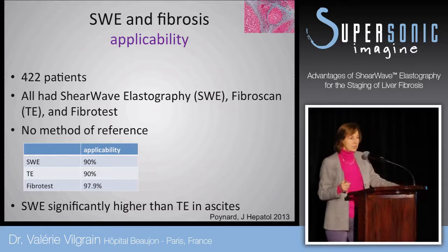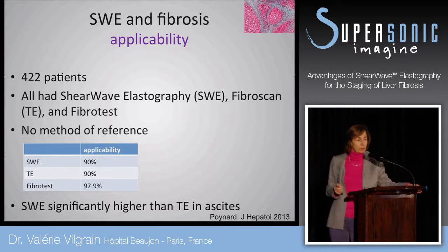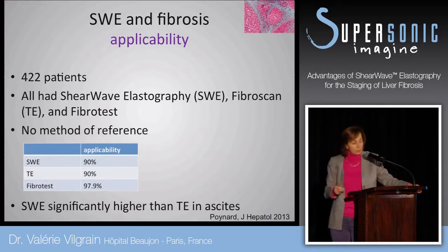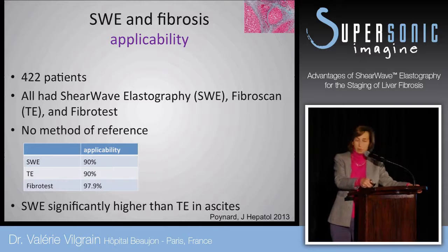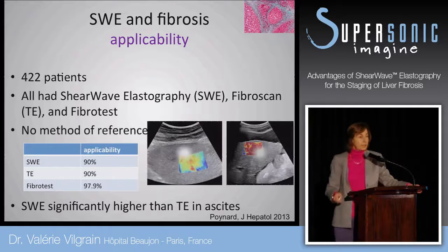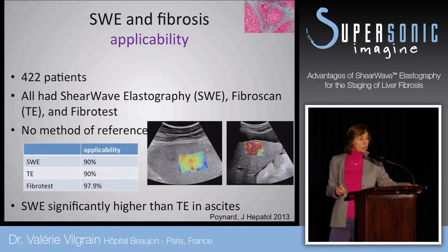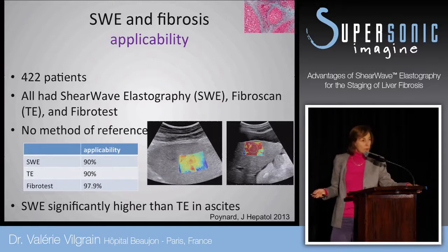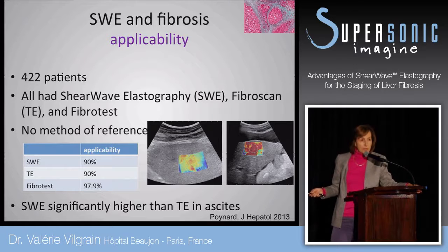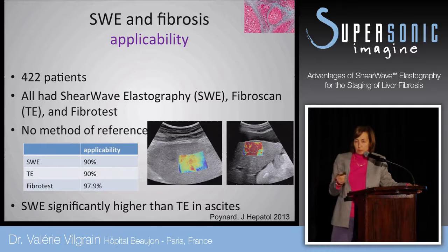Importantly, shear wave elastography performs better in patients with ascites. In clinical practice we know this because we evaluate patients every day. Here are two examples — patients with chronic liver disease: on the left, a patient without ascites; on the right, a patient with ascites. You can see that we can record tissue elasticity even in patients with ascites.